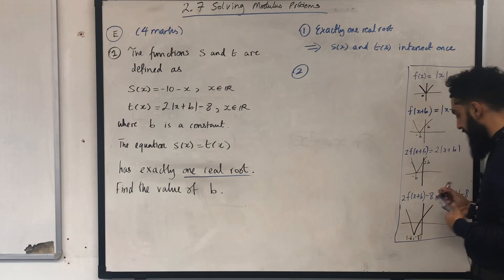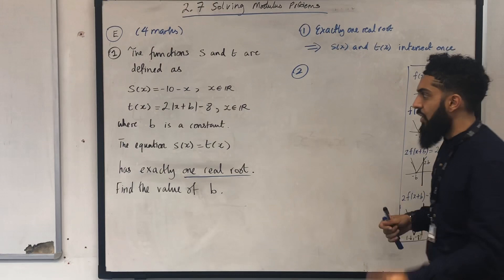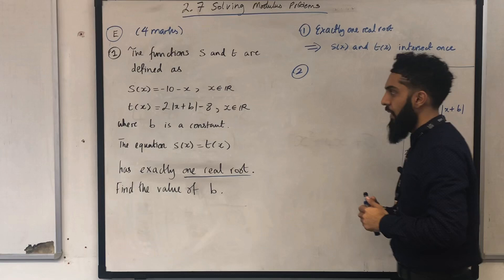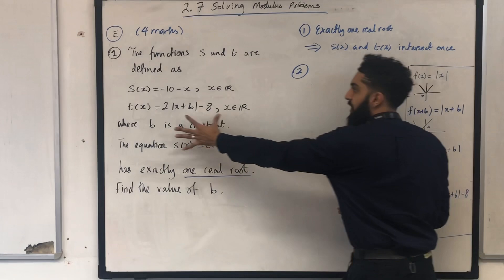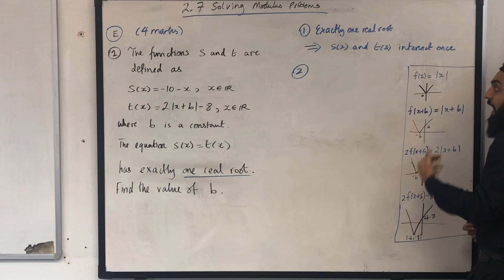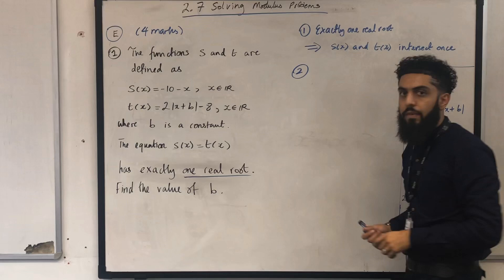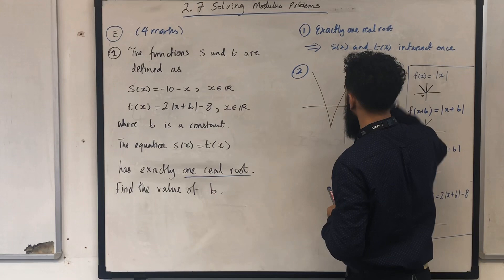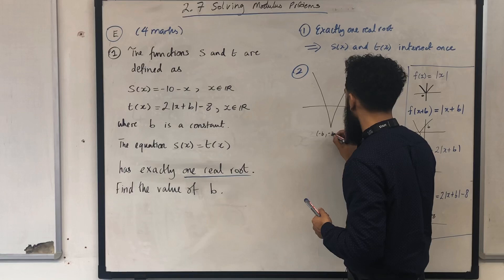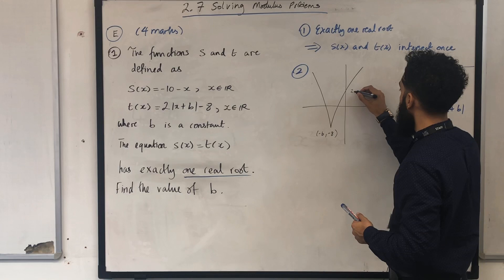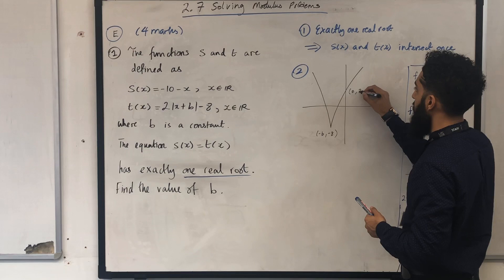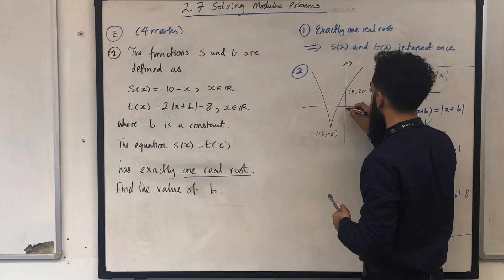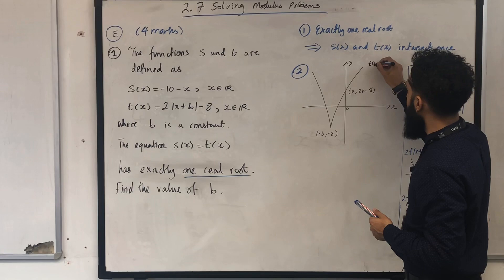Now I'm going to sketch the graph t of x equal 2 modulus of x plus b minus 8. This method was useful — I started with the basic shape of modulus of x and applied a sequence of transformations to obtain the graph for t of x. The vertex is at minus b, minus 8, and the y-intercept in coordinate form is 0, 2b minus 8.